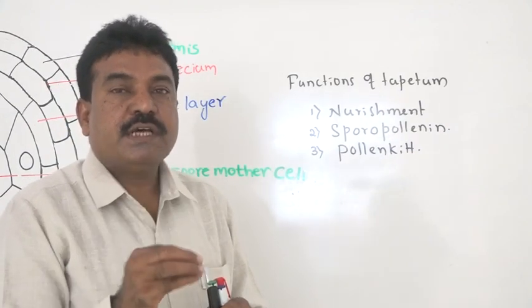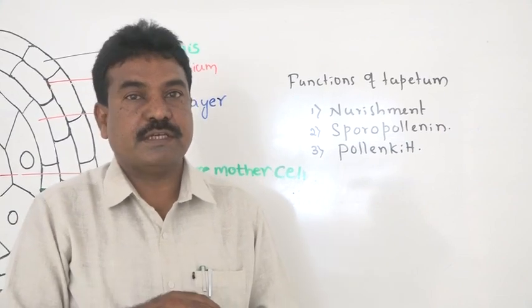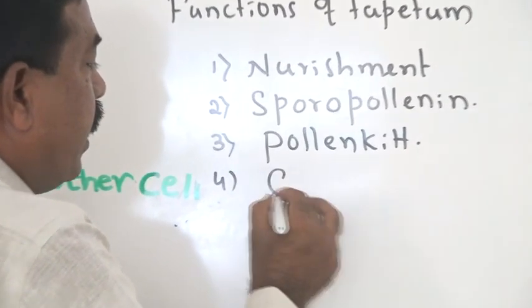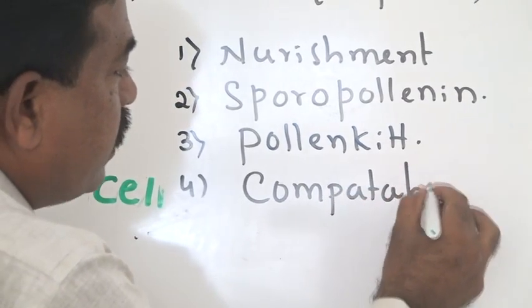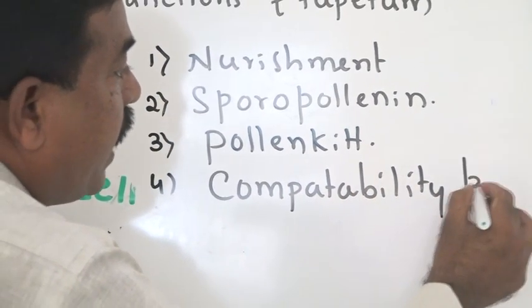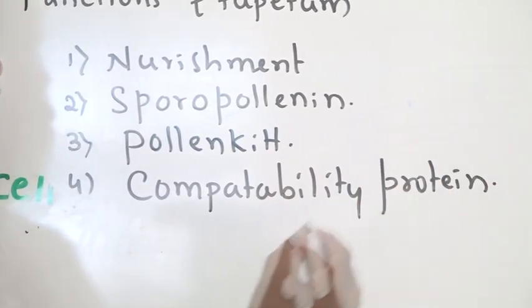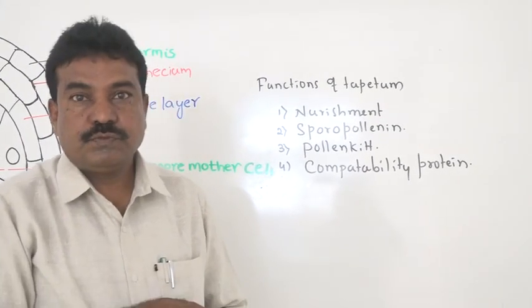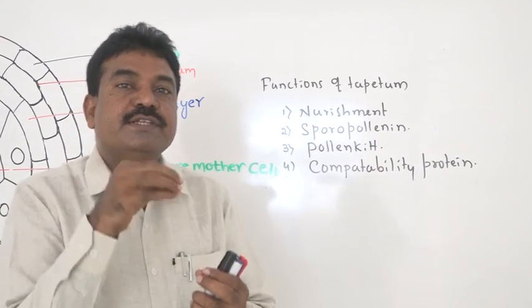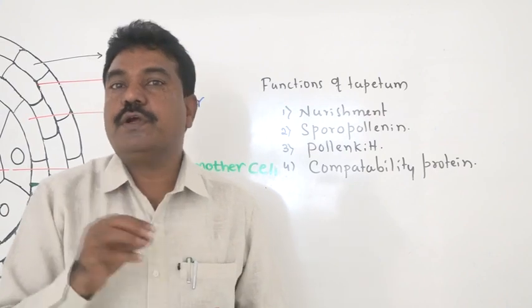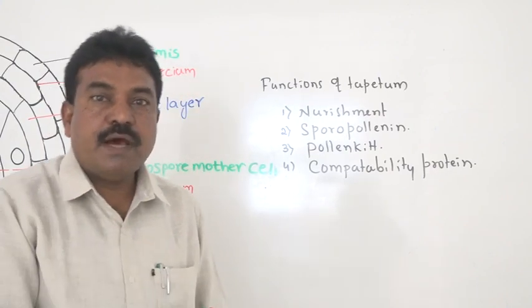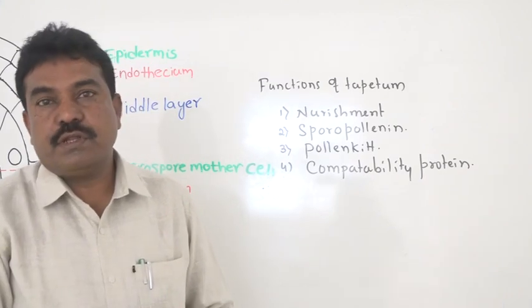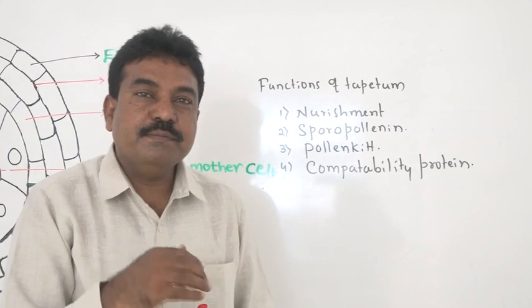The pollen kit is secreted by the tapetum. The tapetum also secretes a specialized protein called the compatibility protein. That protein helps to determine whether the pollen grain is their own or foreign. If compatible pollen grain lands on the stigma, it germinates — that process is called compatibility. If foreign flower pollen grain lands on the stigma, there is no germination — that phenomenon is called incompatibility, or in general terms, mismatching.